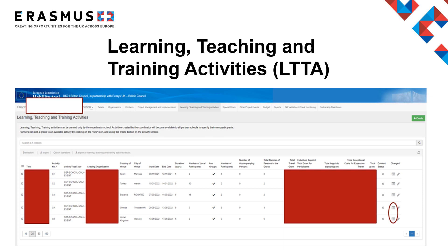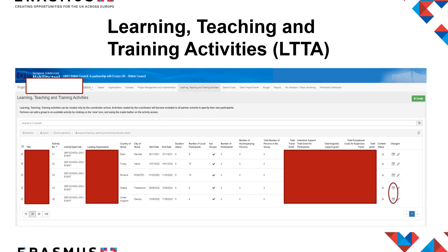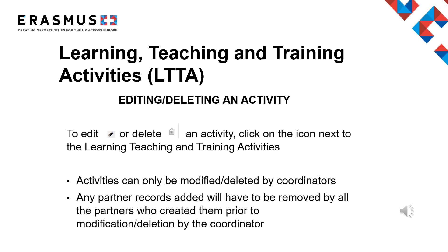Once all details of the events have been completed, the mobility will be listed under the LTTA tab. These mobilities will be visible within each partner's individual record in the Mobility Tool as well as the lead organisation's record. To enter costs for a mobility, each partner organisation should click the edit button on the far right of the screen. If you need to revisit any activities to modify or delete them, note that only certain fields will become editable. Activities can only be modified and deleted by the coordinator; all partner records created under the activity must be removed by partners before this can be done.